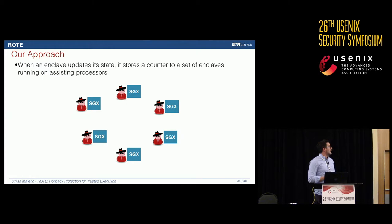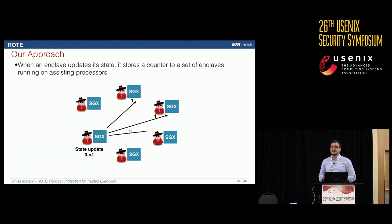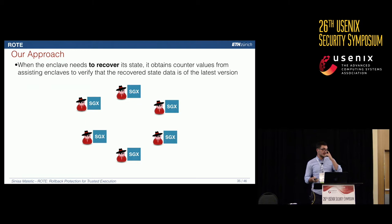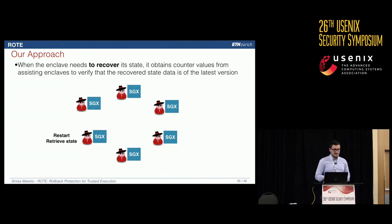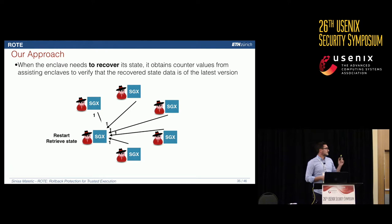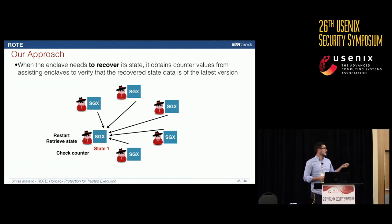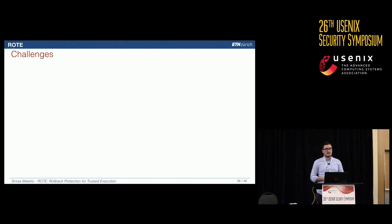When one enclave wants to update its state, it saves the state locally to disk and sends a counter to each other participating node in the group. These nodes save the counter. When the enclave needs to recover its state, it loads the state from disk and asks all other participating nodes to retrieve the counter, then compares. If the counter matches, it accepts the state.